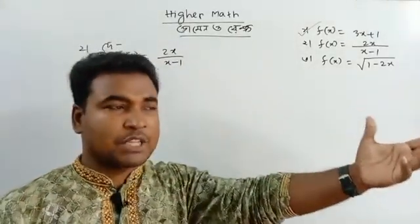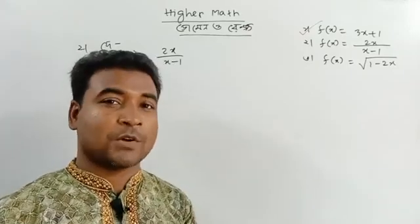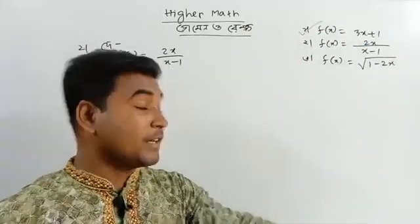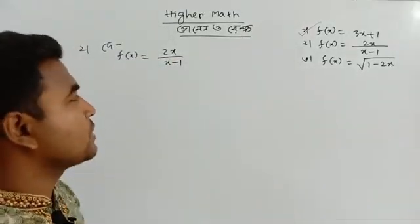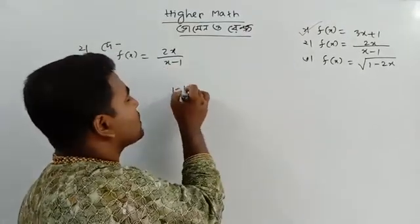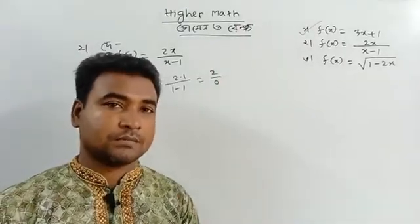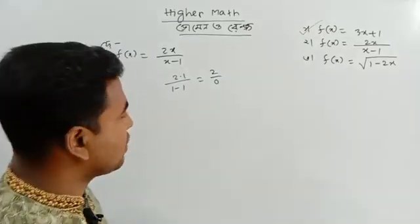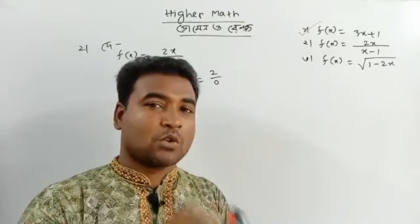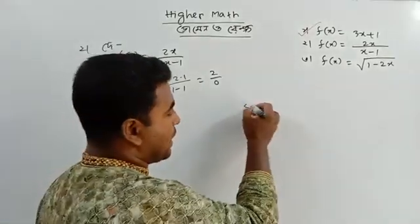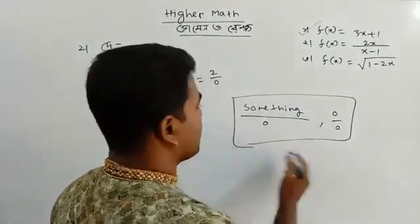Even if you look at that, the function is defined where x is valid. The only issue is x minus 1 — we can take x to 1, so what do we do? 2 divided by 0, something divided by 0 — which is undefined. It's not a valid function at x = 1. Something divided by 0 is undefined.